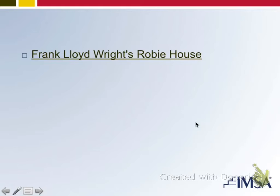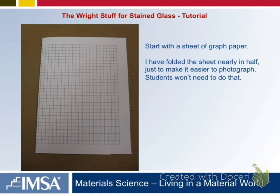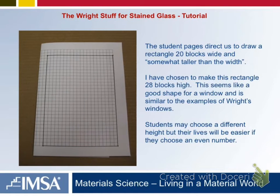What we're going to be doing today is start with a piece of graph paper. In these pictures and on this tutorial it's folded in half — you won't need to do that. You're going to be given step-by-step instructions, so pay attention. You'll get a picture view of what you'll be doing, and then you'll get your handout. The student pages will direct you to draw a rectangle that is 20 blocks wide and somewhat taller than the width — your choice how tall, but the sample uses a height of 28 blocks, which fits the shape of Wright's style of windows. You might want to make an even number for the height, as it may make the next step easier.